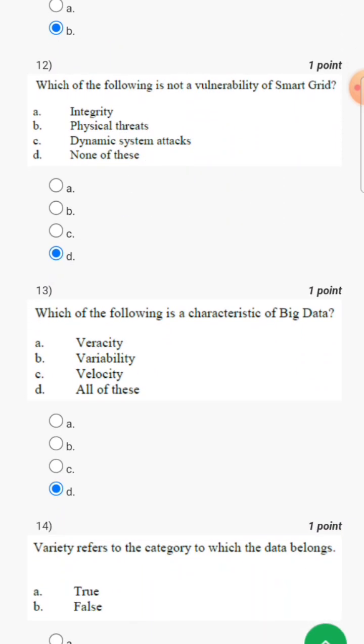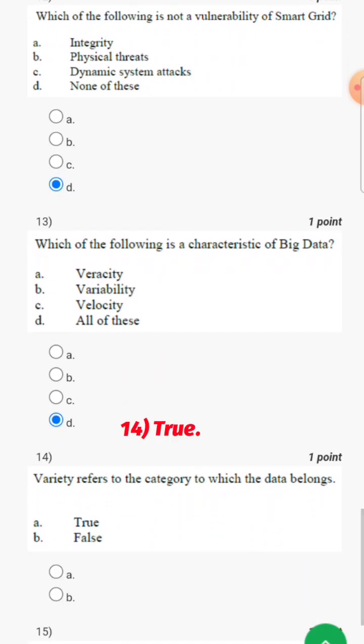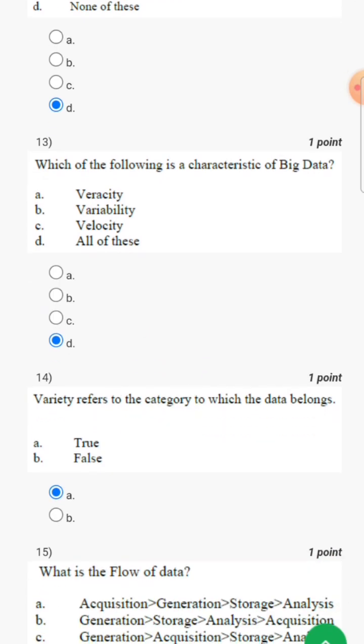Variety refers to the category to which data belongs. So it is true or false? So it will be true. Variety refers to the category to which data belongs. Which one of the following is the flow of data?